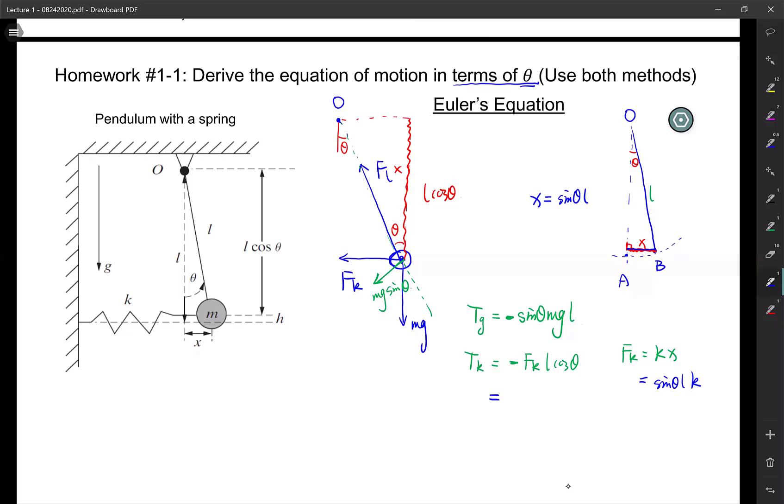So you have minus K L squared sine theta cosine theta. All right, so that's the torque.